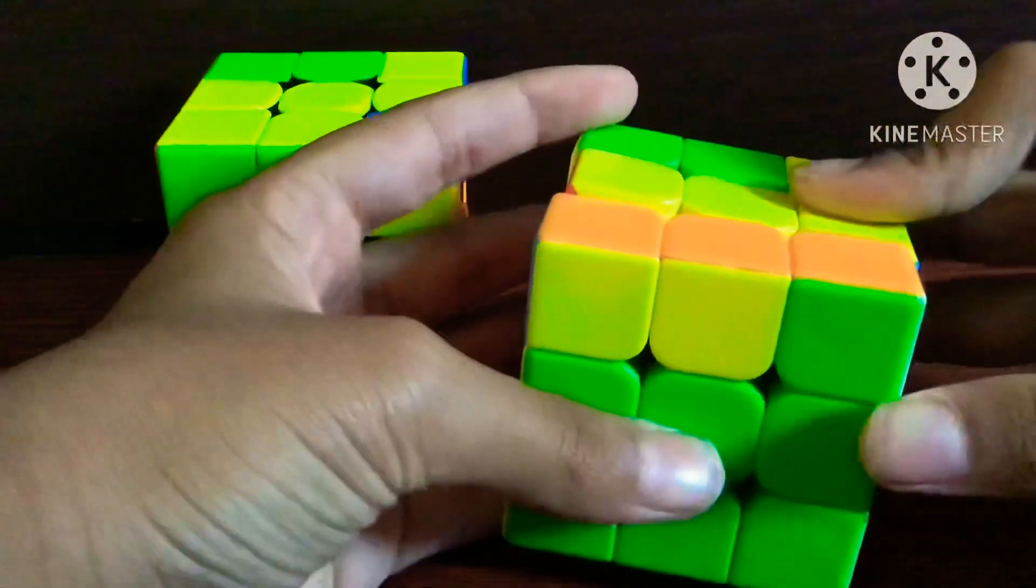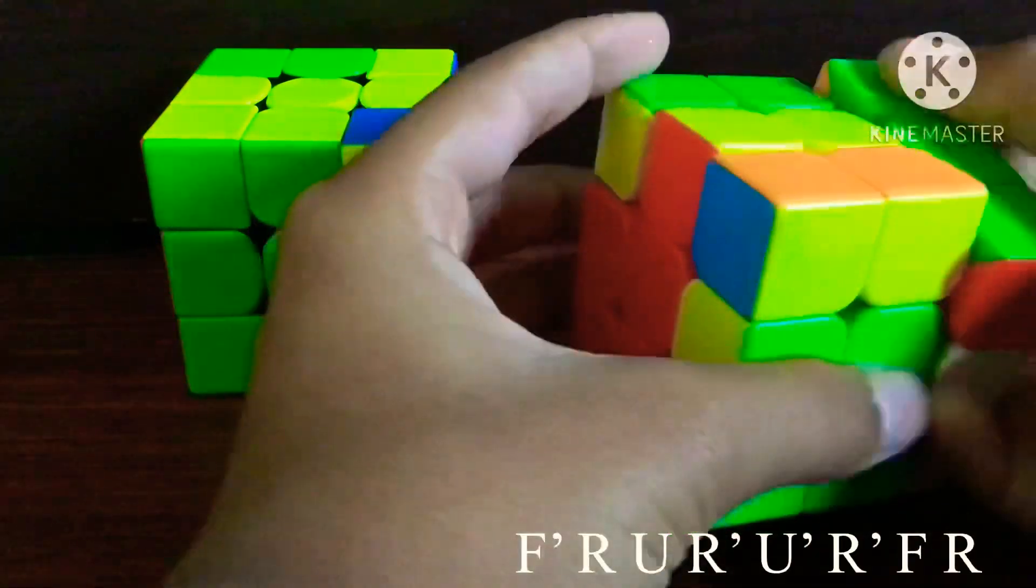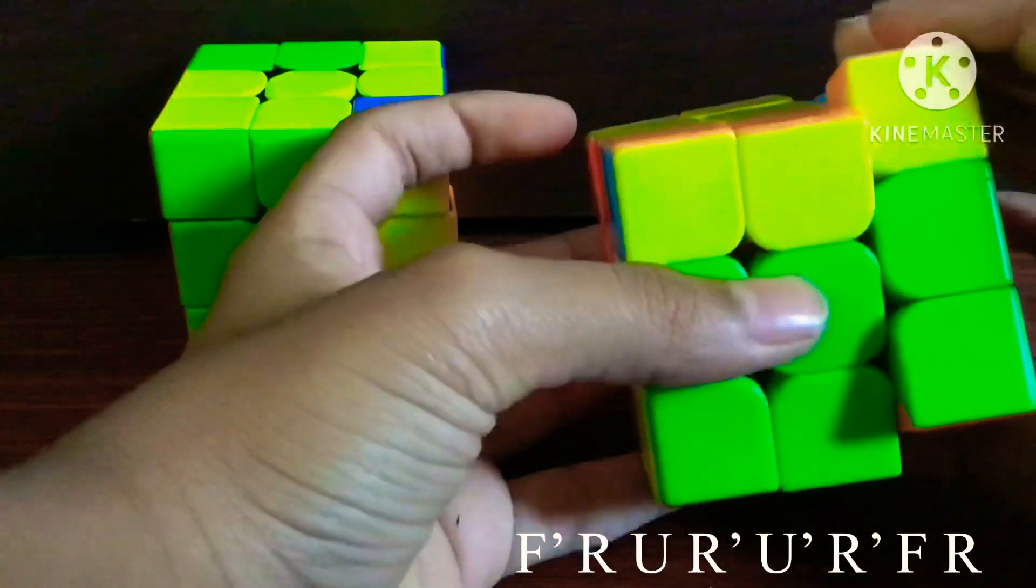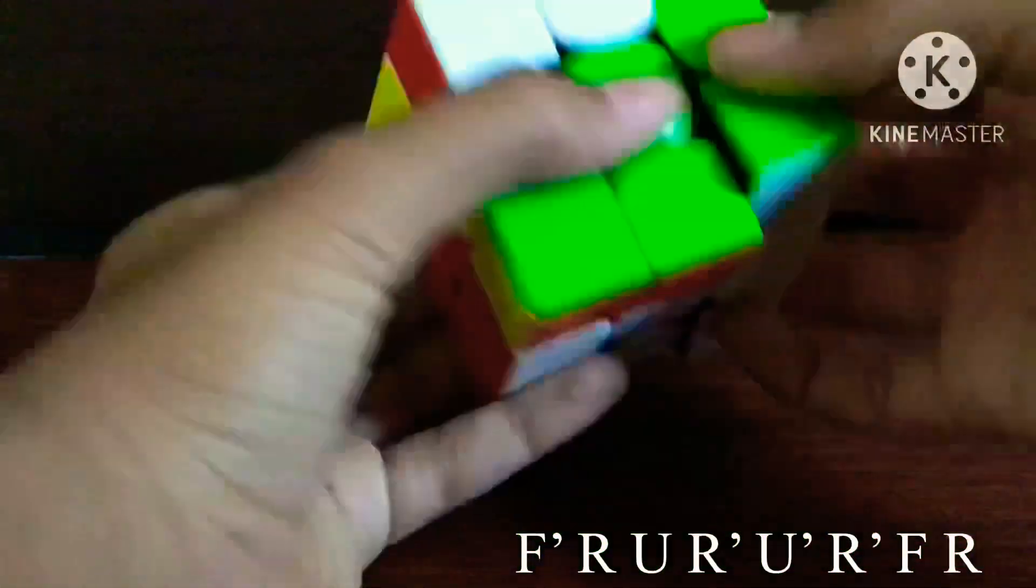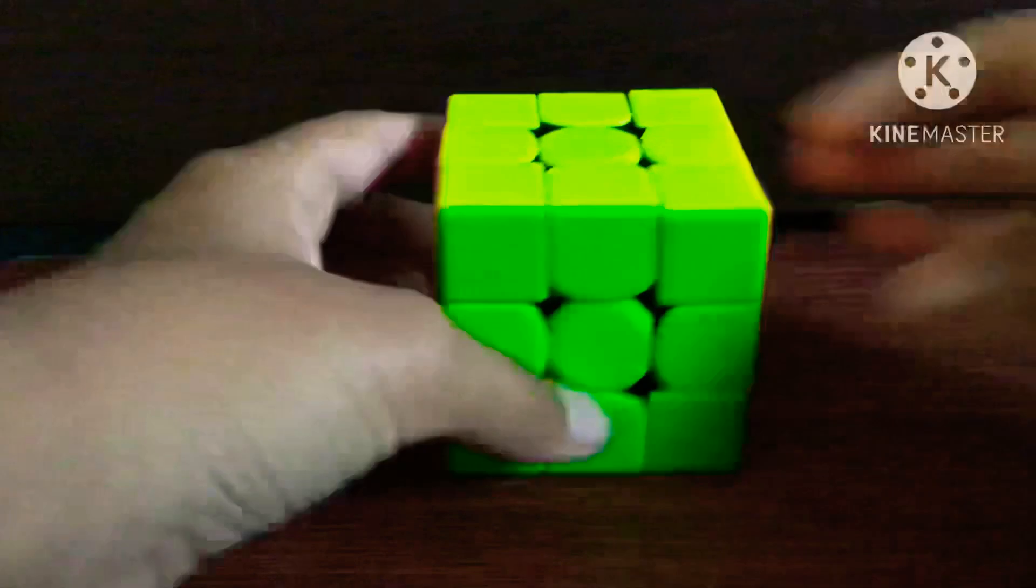So what you have to do is F prime, and then do R G R U and then R prime F R, just do sledge afterwards: F prime R G R U sledge.